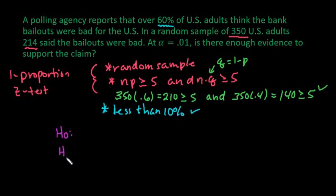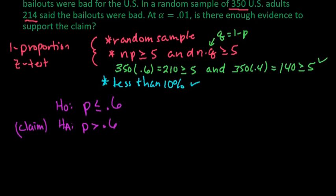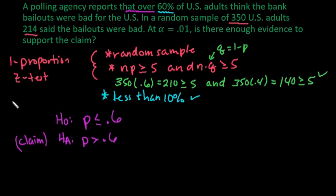After we have tested the conditions and determined what test we are using, we want to state the null and the alternative. Remember, the null always contains equality. The alternative does not. So for this, it says the claim is that over 60%. Over does not include. So our alternative, P is greater than 0.60. This would be our claim. The null hypothesis would be the opposite of that. So P less than or equal to 0.6.